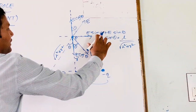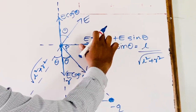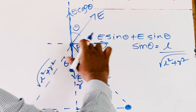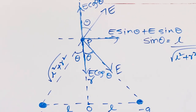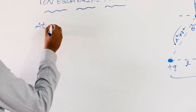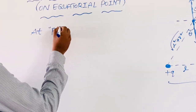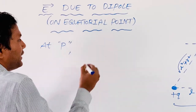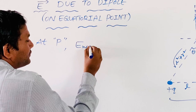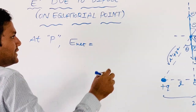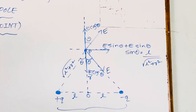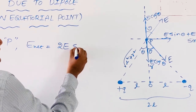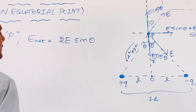Now, clearly only the two E sin θ components are adding. The resultant field direction is in this direction — along the equatorial line. Therefore, at point P on the equatorial line, what we can write is: E_net = E sin θ + E sin θ = 2E sin θ.